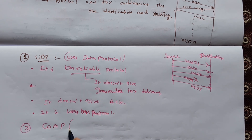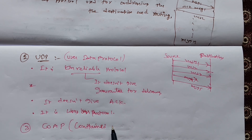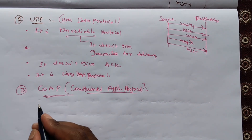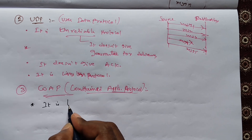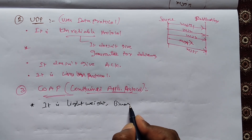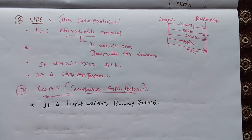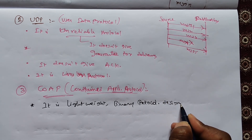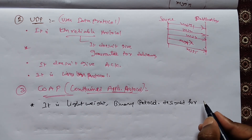The next one is CoAP, which stands for Constrained Application Protocol. It is a lightweight binary protocol, and it is designed for constrained networks and devices such as IoT devices.